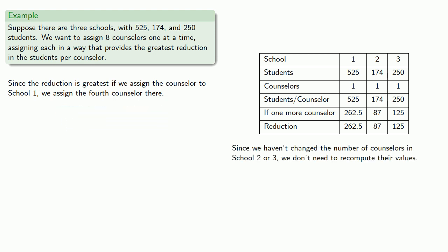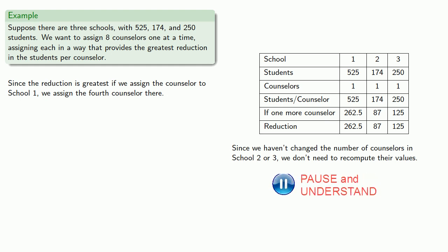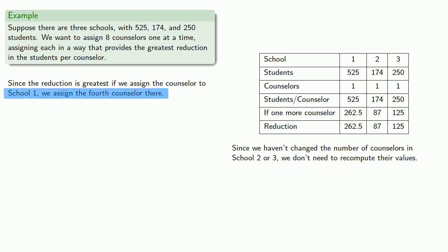Since we haven't changed the number of counselors in Schools 2 or 3, we don't need to recompute their values; we can use the ones we've already created. But since we have added a counselor to School 1, we'll need to recompute the values in the first column.